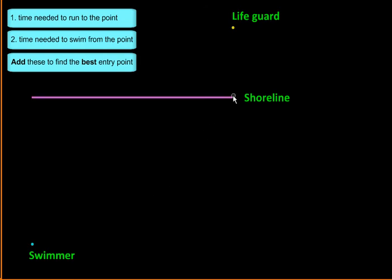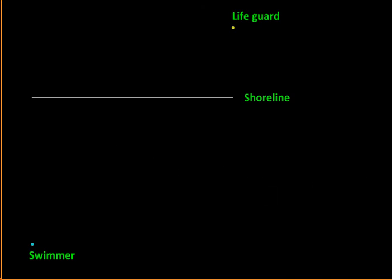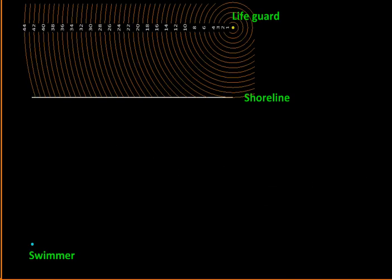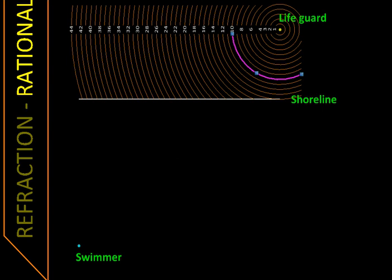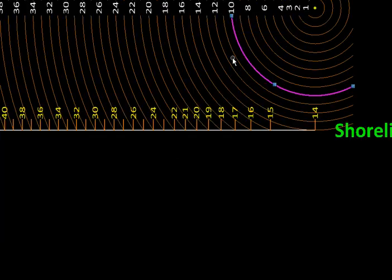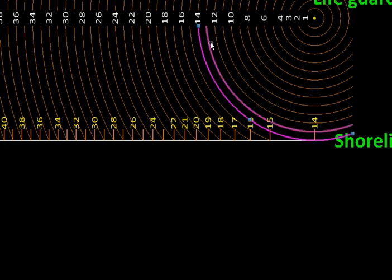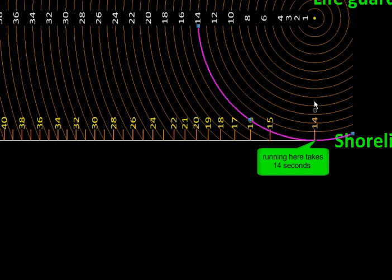The sum of these two times will help us evaluate the best point of entry on the shoreline. So let us start by drawing these concentric circles around the lifeguard's position. These circles indicate the time required to reach them. For example, to reach this circle the lifeguard will have to run three seconds, and to reach this circle he will have to run ten seconds, and so on. Then we will be taking the points of intersection of these circles with the shoreline. So here is the intersection of the fourteen second circle with the shoreline, so this point on the shoreline will take fourteen seconds of running, and so on.